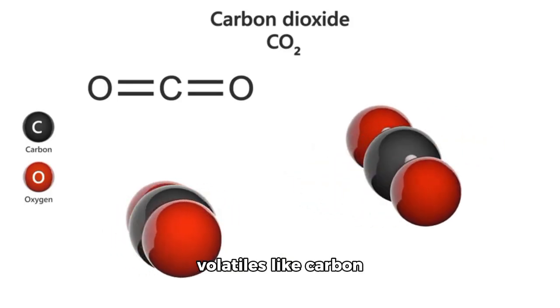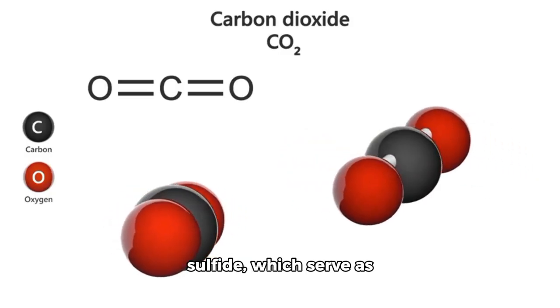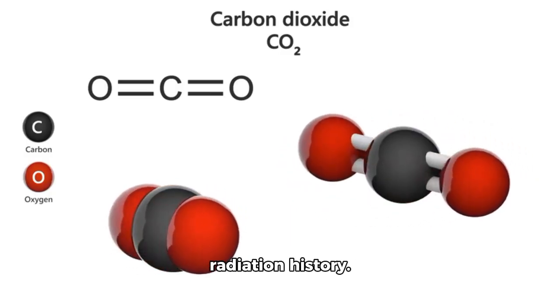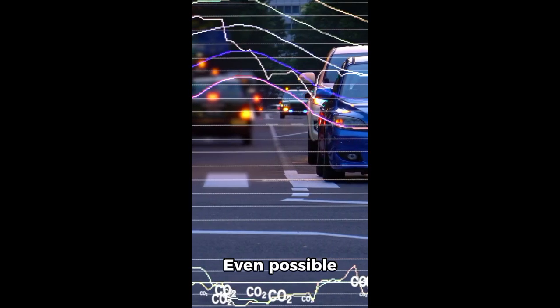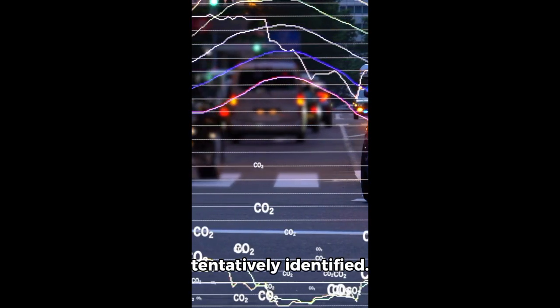Webb also detected minor volatiles like carbon monoxide and carbonyl sulfide, which serve as clues to thermal and radiation history. Even possible isotopic signatures, such as carbon-13 in CO2, were tentatively identified.